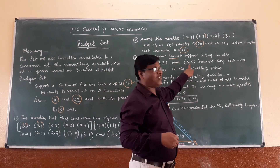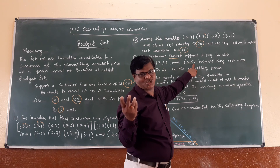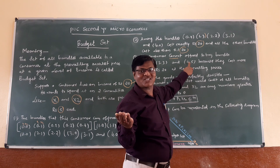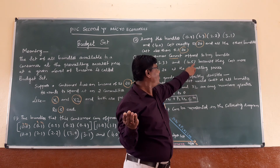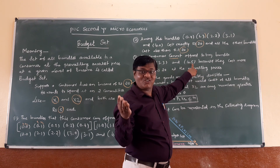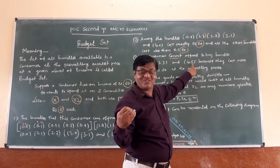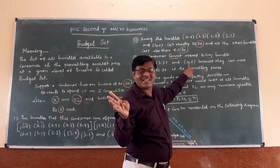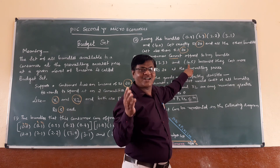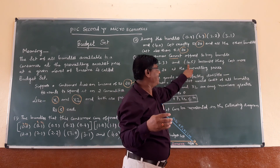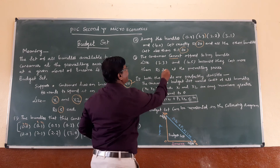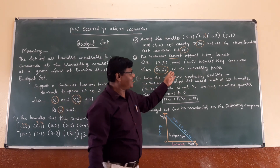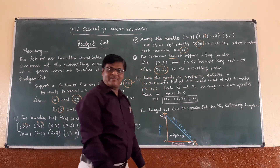Similarly, 4 X1 and 5 X2: 5 times 4 equals RS20, plus 5 times 5 equals RS25, totalling RS45 — he does not have sufficient income. The consumer cannot buy such bundles because they cost more than RS20 at the prevailing prices.